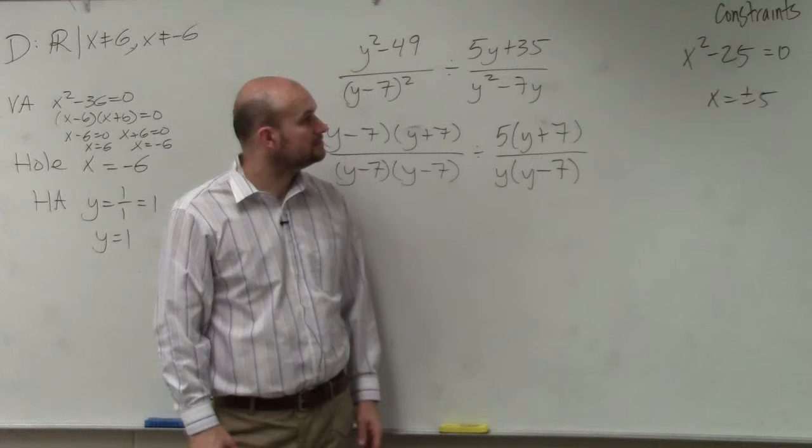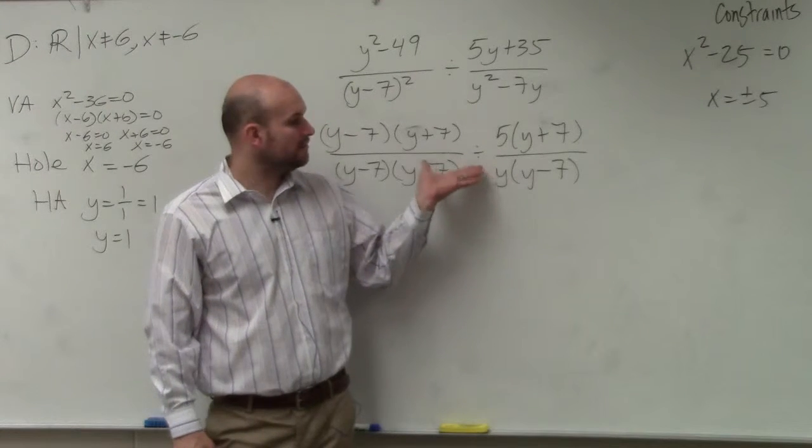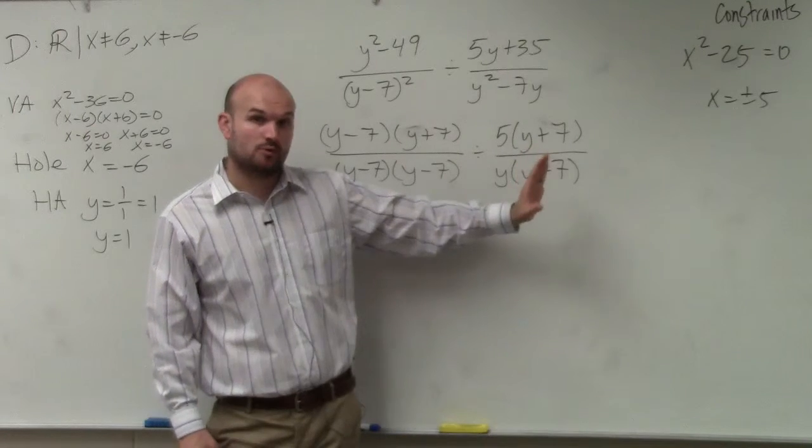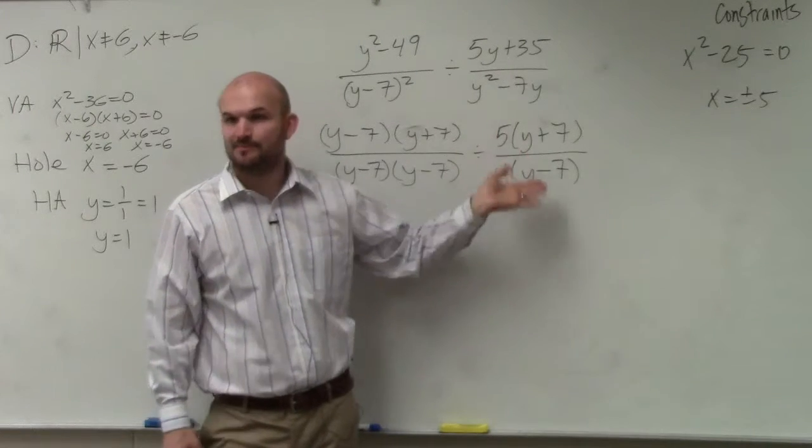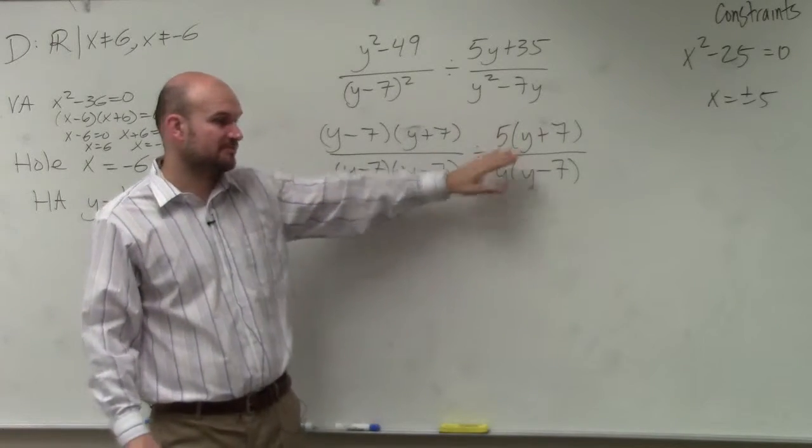How would it be y minus 7, and y minus 7 equals 0, and n minus 7? So remember, when we multiply, we just multiply straight across. But when we're dividing, we flip or reciprocate and multiply. So we've got to multiply by the reciprocal.